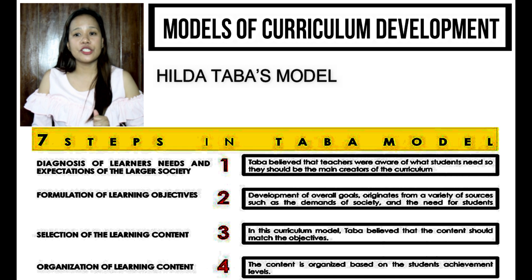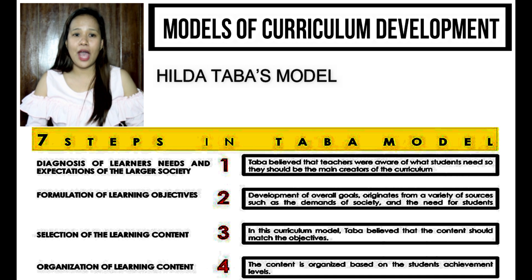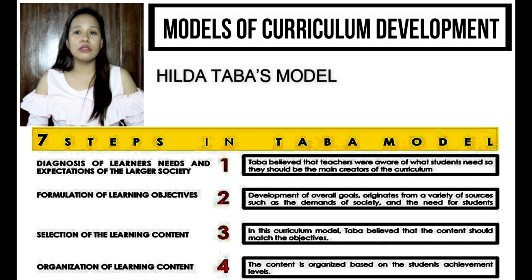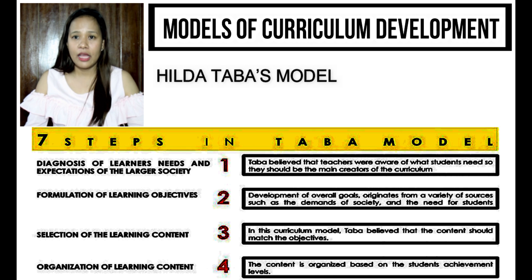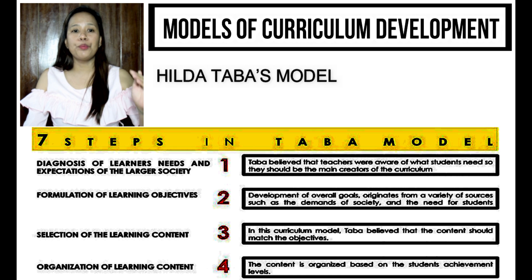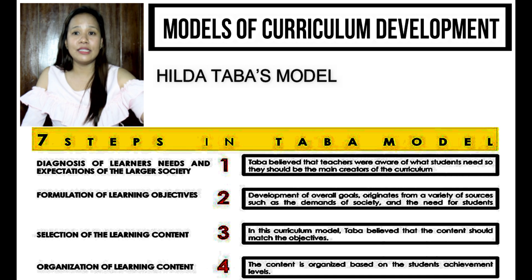There are seven steps in Taba's model of curriculum development. The first is diagnosis of learners' needs and expectations of the larger society. For Taba, you must know the weaknesses and strengths, as well as the learning potentials and learning styles of the students, because knowing all those things makes it easier to craft lessons or curriculum. After addressing learners' needs, you proceed to the second step: formulation of learning objectives, which must be based on the needs of the students.